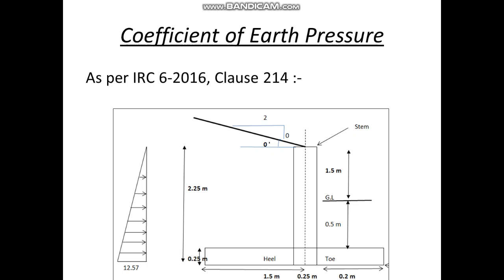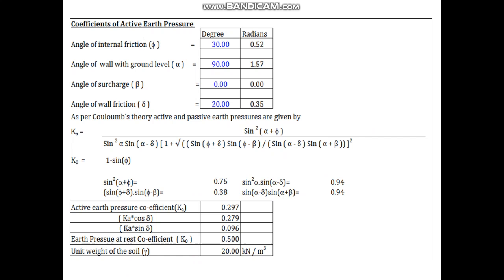The earth pressure will be acting on the wall from the soil. Here we can see the angle between the road surface and the wall is 0 degrees, and the angle between the wall and the soil is 90 degrees. We will be calculating the earth pressure accordingly. The angle of internal friction is considered as 30 degrees and the angle of wall friction is 20 degrees. From these, we have calculated the active earth pressure and its horizontal and vertical components.